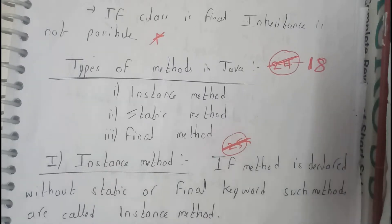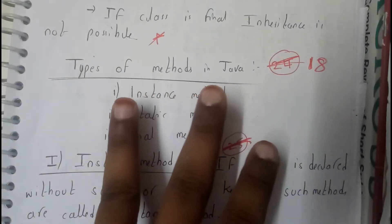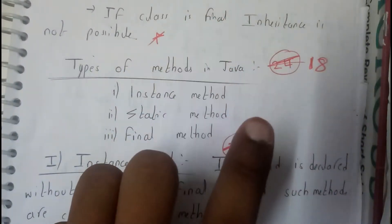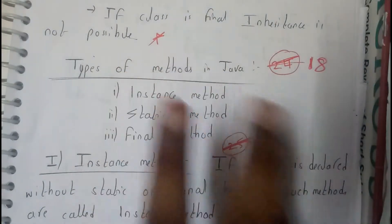Hello, we are back with our next tutorial. In this tutorial, let us go through types of methods in Java. There are basically three different methods: instance, static, and final.